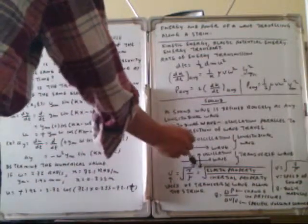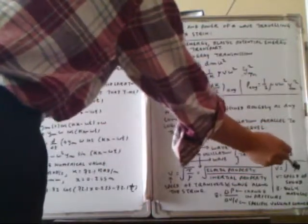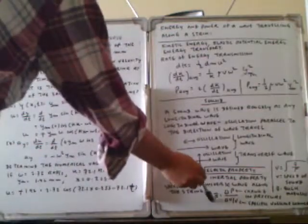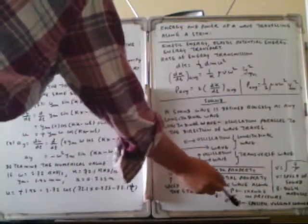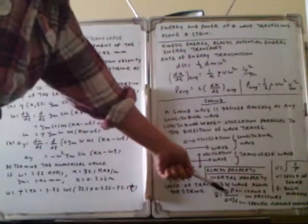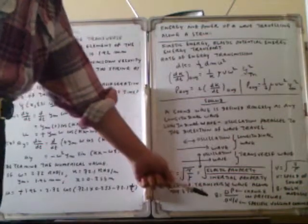We can calculate the speed of the transverse wave along a string as v = √(τ/μ), where τ is the tension (elastic property) and μ is the linear mass density (inertial property). Similarly, the speed of sound is v = √(B/ρ), where B is the bulk modulus. The bulk modulus can be calculated as B = -ΔP/(ΔV/V), where ΔP is the change in pressure and ΔV/V is the fractional volumetric change. These factors affect the sound velocity depending on the medium.